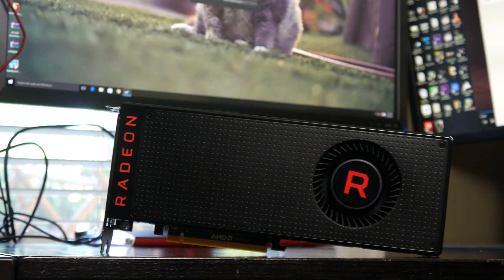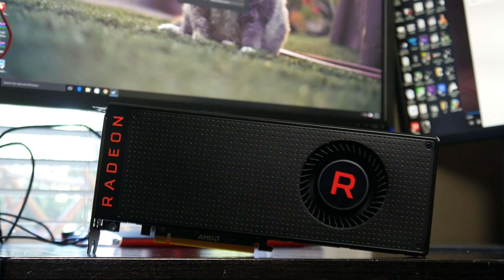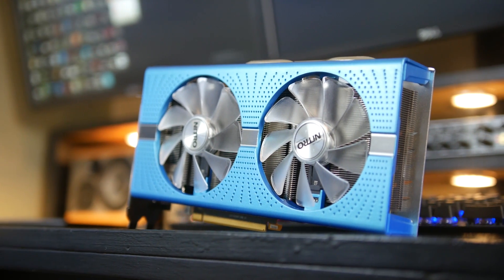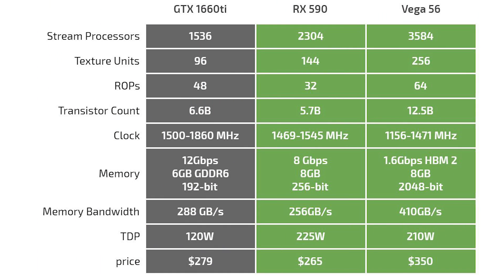We're specifically looking at the Vega 56 reference grade card we got from AMD a couple of years back, and the Sapphire RX 590. You can take a look at the specification differences, though it's hard to compare directly since this is not an apples-to-apples comparison — AMD and NVIDIA run on completely different architectures — but here we have key parameters and facts describing each card so you can get a better general idea.